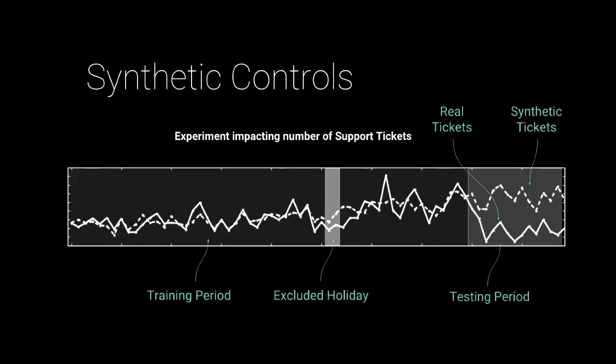Here's an example of a treatment we launched targeting support tickets in a city. During the training period, you can see the solid line — the actual metric — and the dotted line — the synthetic metric — fitting pretty well up until the moment we made the intervention. During the testing period, we can finally measure the causal impact on the actual number of support tickets. There was a significant drop, so this was a successful experiment. We also have a lot of unsuccessful experiments that I didn't want to show you.